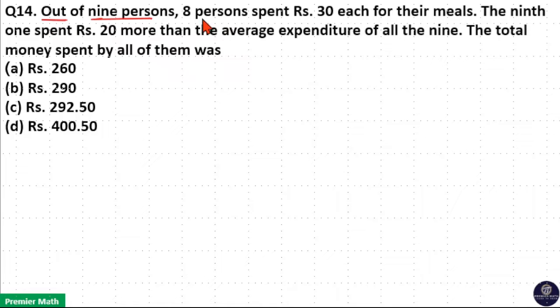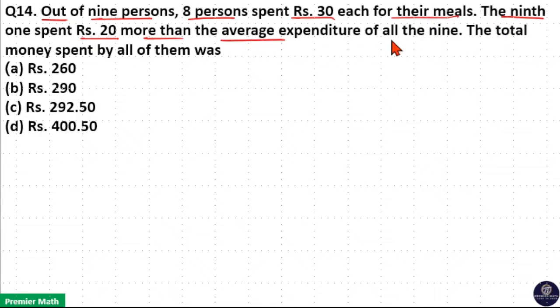Out of 9 people, 8 spent Rs. 30 each for their meal. The 9th one spent Rs. 20 more than the average expenditure of all the 9. The total money spent by all of them was?